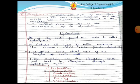Exosphere. It is the outermost layer of the atmosphere — the zone where molecules and atoms escape into space. It extends from the top of the thermosphere up to 10,000 km.